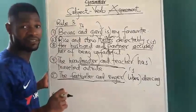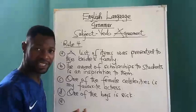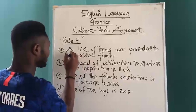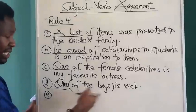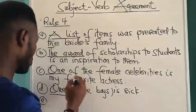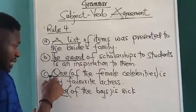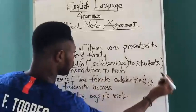A compound subject that acts as a singular subject takes a singular verb. The fourth rule is about a singular subject that is followed by a plural modifier — it takes a singular verb. So we have a singular subject like 'list', 'award', or 'one', followed by a plural modifier like 'of the boys' — normally we call this a prepositional phrase or adjectival phrase. This adjectival phrase following the singular subject takes a singular verb.